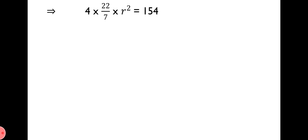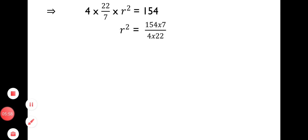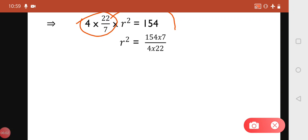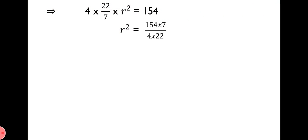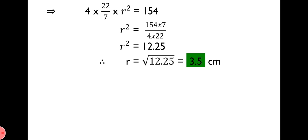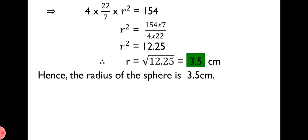For solving, we insert the values: 4 × (22/7) × r² = 154. Then we transpose the numbers to the right-hand side, keeping r² on the left. Therefore, r² = 154 × 7 / (4 × 22) = 12.25. Therefore, r = √12.25 = 3.5 cm. You can use the division method to find the square root. Hence, the radius of the sphere is 3.5 cm.